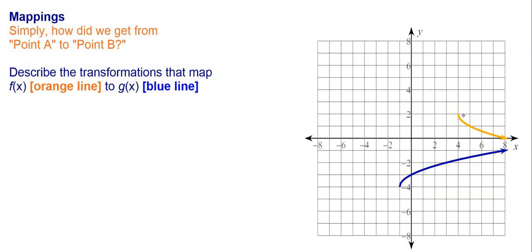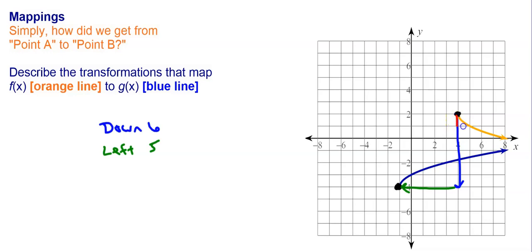Just like we did with other functions, we can also talk about mappings — the directions from point A to point B. We can describe the transformations that map us from the orange line to the blue line. We focus on the starting points as key points. To go from the orange line to the blue line, I have to go down 6 and to the left 5. Both have the same size, but this one is decreasing and this one is increasing, so it got flipped or inverted. So to transform the orange line to the blue line: down 6, left 5, inverted. Remember, mappings are directions — we're not writing an equation, we're asking how you get from one place to another.